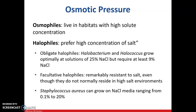Osmophiles live in habitats with high solute concentrations. Halophiles prefer high salt concentrations. Obligate halophiles include Halobacterium and Halococcus, which grow in solutions up to 25% sodium chloride but require at least a 9% sodium chloride environment to live. Facultative halophiles are resistant to salt even though they do not normally reside in high-salt environments. Staphylococcus aureus can grow on sodium chloride media ranging from 0.1% to 20%, which is quite high.